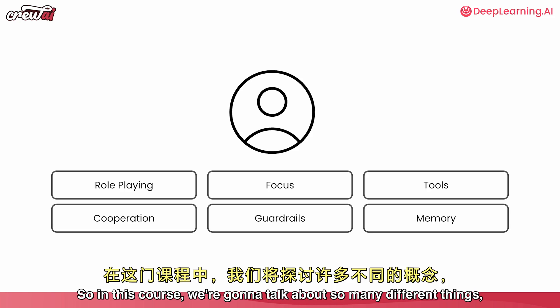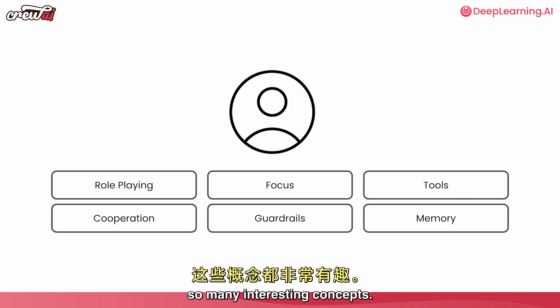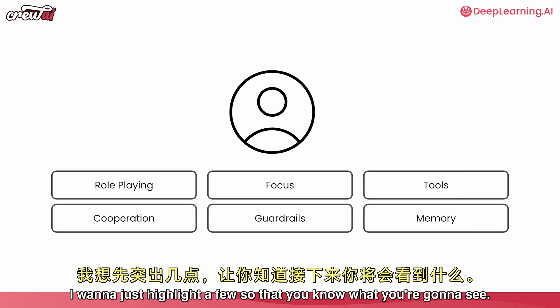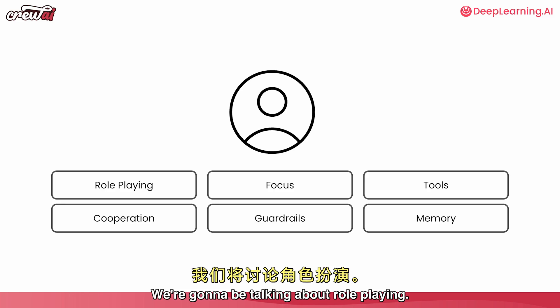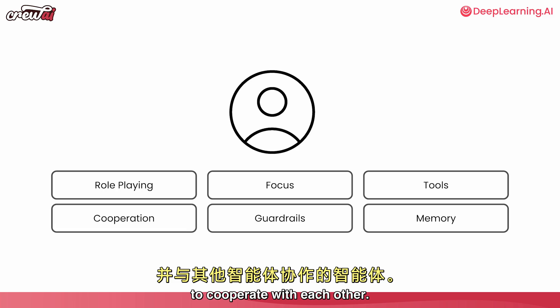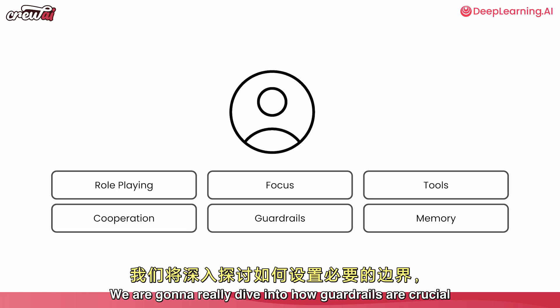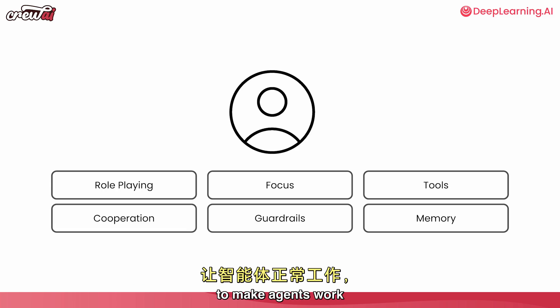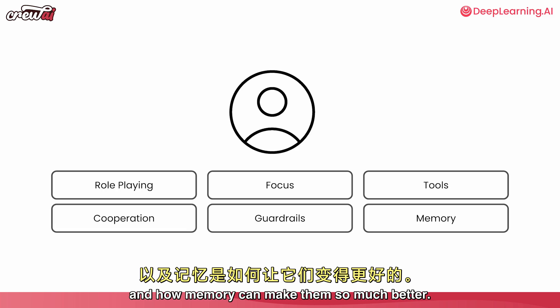In this course, we're going to talk about so many different things, so many interesting concepts. We're going to be talking about role-playing, agents that are able to focus, to use tools, to cooperate with each other. We are going to really dive into how guardrails are crucial to make agents work, and how memory can make them so much better.